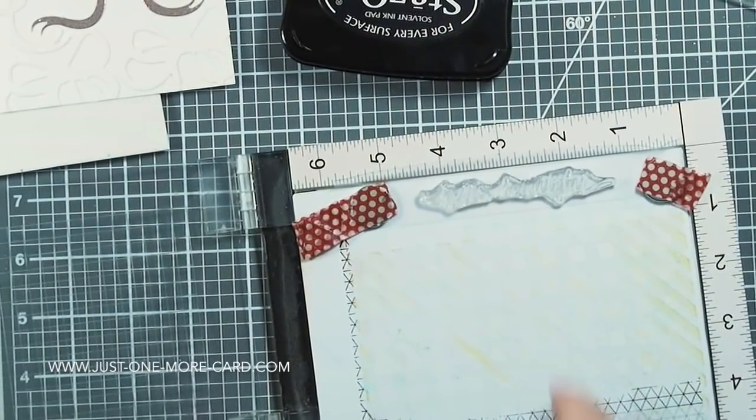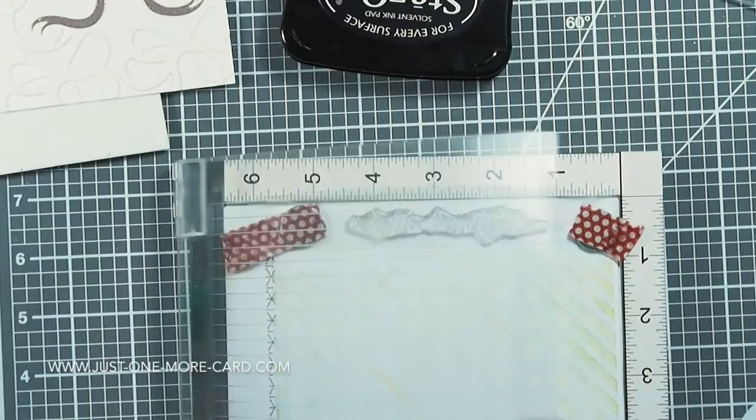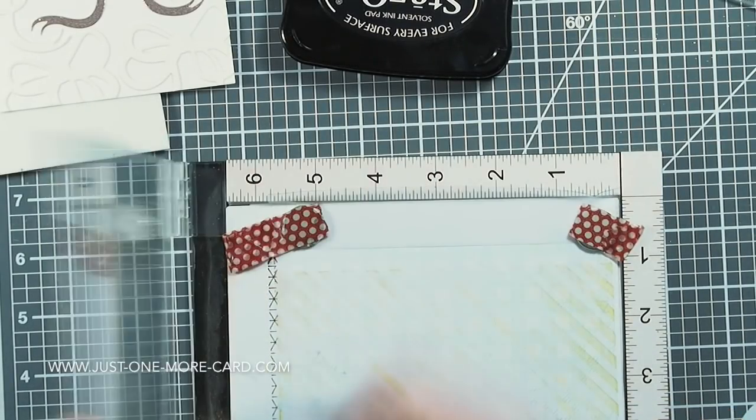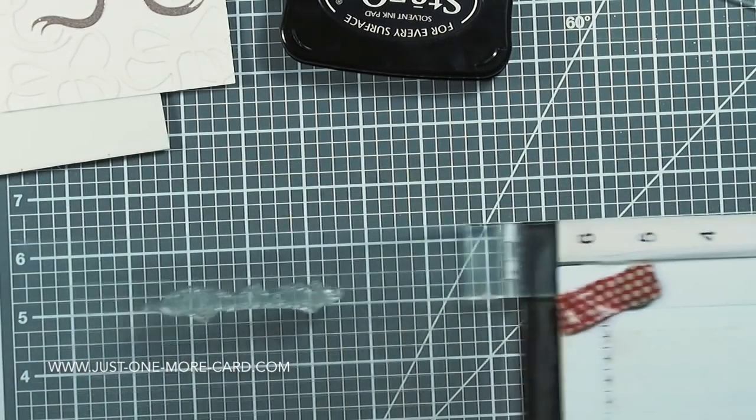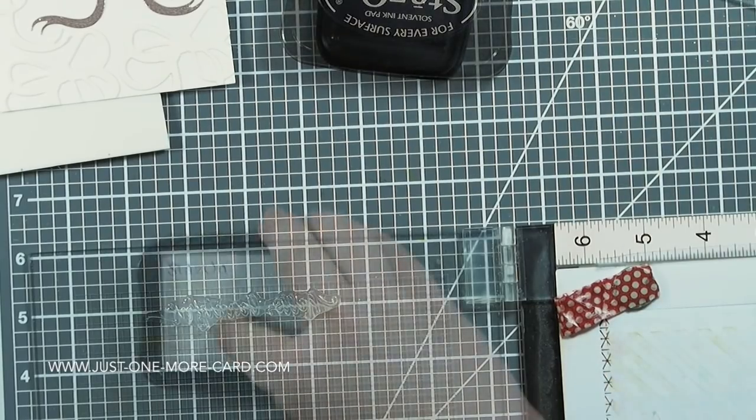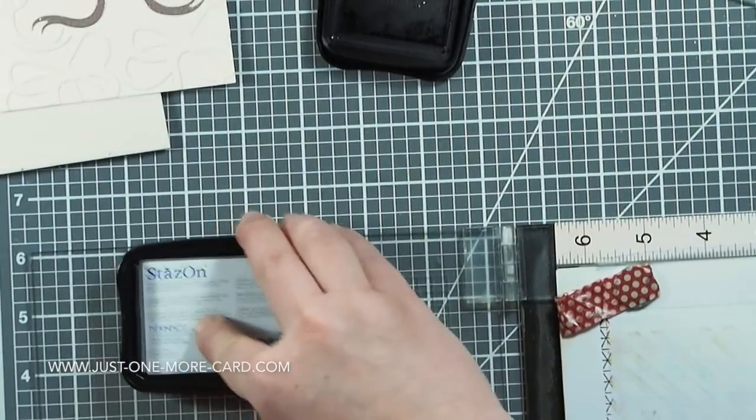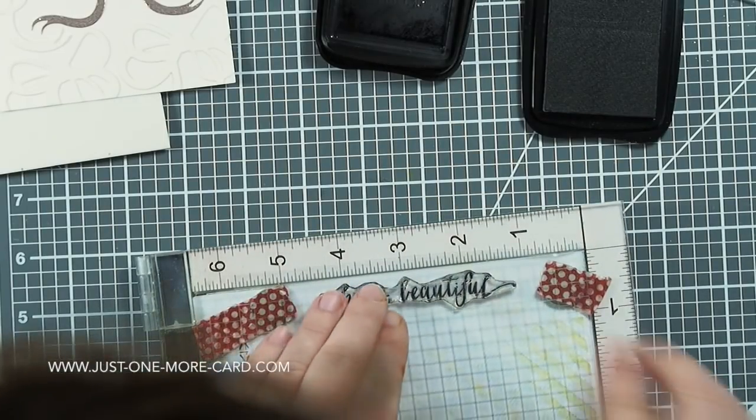Then I'm using the sentiment Hello Beautiful from the Simon Says Stamp Summer Garden Stamp Set, and I'm going to stamp this on vellum. I bought some Stazon ink, just to be sure that the ink would work well on vellum, because I had some not-so-great experiences in the past.